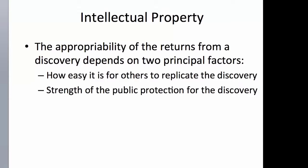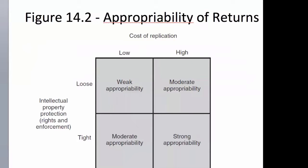As you get into lawsuits, the appropriability of returns from a discovery or breach of intellectual property is based on two principal factors: how easy it is for others to replicate the discovery or invention, and the strength of public protection for it. This brings us to a chart showing appropriability of returns. If the cost of replication is low and IP protection is loose — maybe no patents filed — there's a weaker probability of returns. On the other end, with tight IP and patents filed, Apple files thousands if not millions of patents a year with the US Patents Office. You can patent more than just a design — you can patent a process or an algorithm too. If the cost of replication is also high, you have strong appropriability.